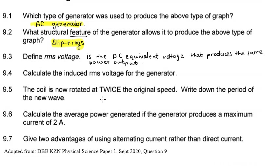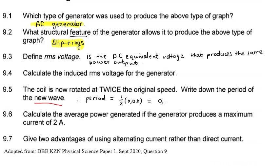If we are rotating the coil twice as fast, then the new curve will complete a full cycle in half the amount of time. That just makes common sense. Therefore, the new period is half of the original period, which gives 0.04 seconds. So rotating the coil twice as fast means it takes half the time to complete a full cycle, and that time is defined as the period.